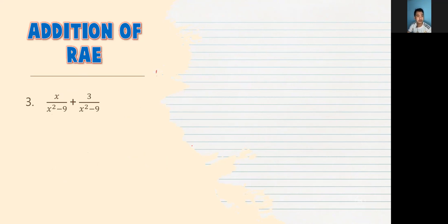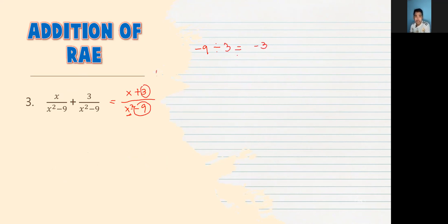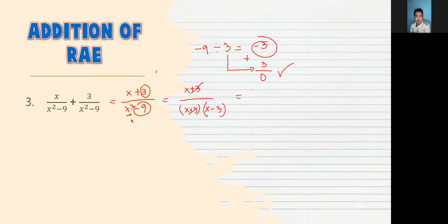Number 3: X over X squared minus 9 plus 3 over X squared minus 9. Magiging X plus 3 sa numerator, copy X squared minus 9. Test if factorable: constant negative 9 divided by 3 is negative 3. Negative 3 plus 3 is 0 — zero yung linear term, so check, factorable. So may x plus 3 sa taas at sa baba. Ang isa pang factor ay x minus 3. Cancel out — may natirang 1 sa taas over x minus 3. Tandaan: kapag na-cancel out lahat ng numerator, you have to put 1.